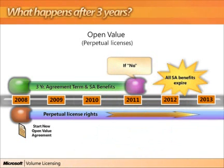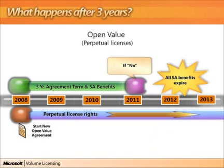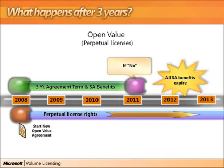Now what happens if they choose not to renew their Software Assurance benefits? As you'll notice, they still have the Office perpetual licensing rights they acquired, so they can use Office for as long as they want to. What will expire, though, is all of the Software Assurance benefits — no more upgrade protection, e-learning courses, or Office home use rights — but they still own the rights to run Microsoft Office for the licenses they acquired.